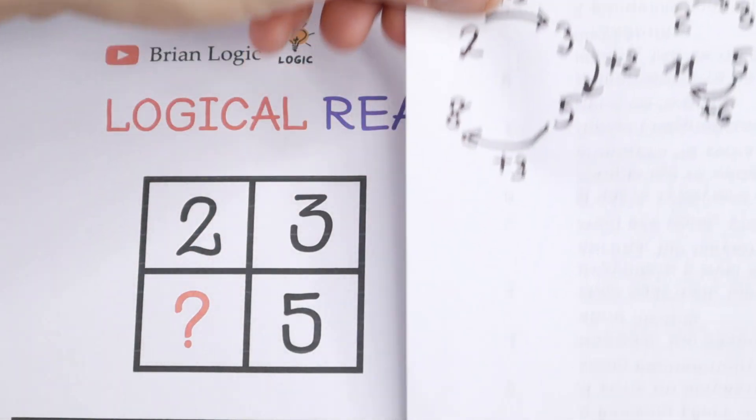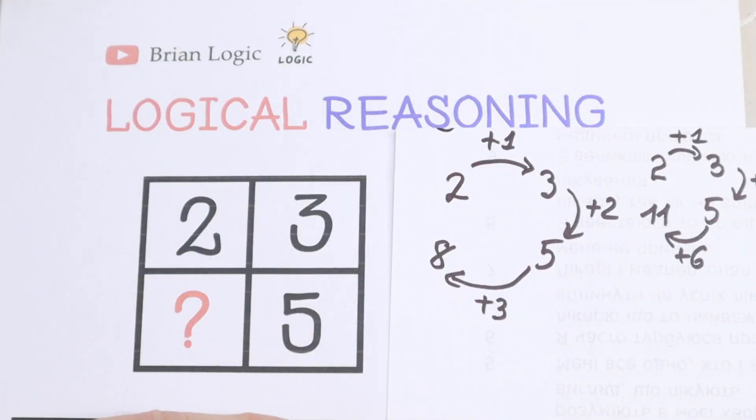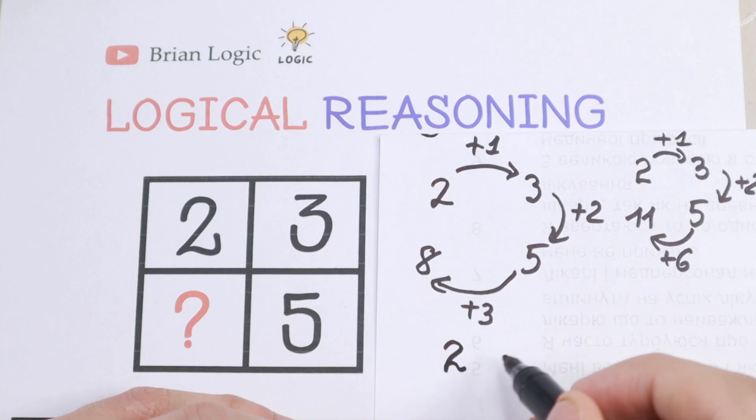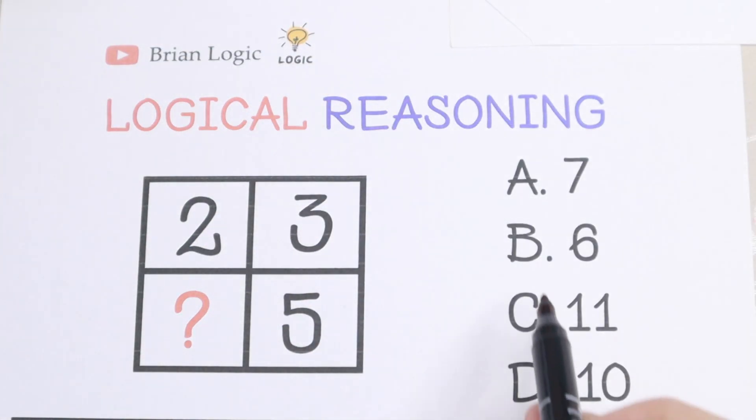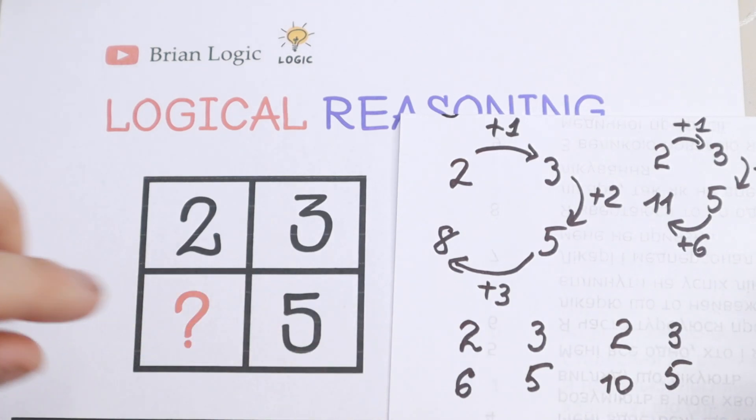But what about the answer? We still have 2 options 6 and 10. So as for me I prefer this number 6 as an answer because we will have the next situation. We will have 2, we will have 3 and we will have 6 and we will have 5. And the second case with this 10. With this 10 we will have 2, we will have 10, we will have 3 and 5. So we still have 2 cases.